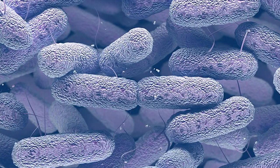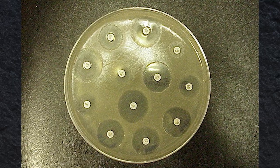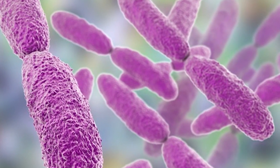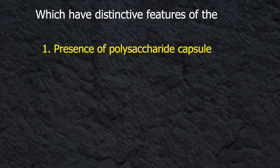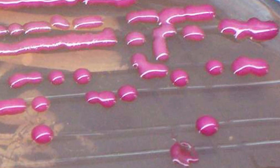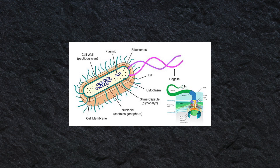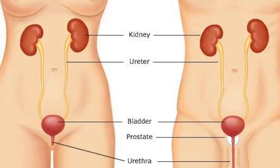The genus Klebsiella is another member of the group Enterobacteriaceae, and many of them are resistant to many antibiotics. Klebsiella are gram-negative lactose-fermenting bacilli which have distinctive features of the presence of a polysaccharide capsule and absence of motility, giving characteristic glistening mucoid colonies due to their capsule. It also contains several types of fimbriae which aid in adherence to respiratory and urinary epithelium.